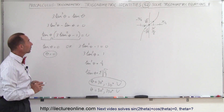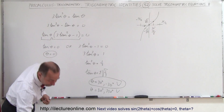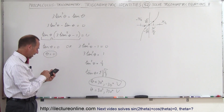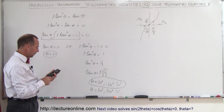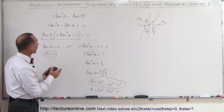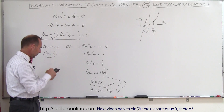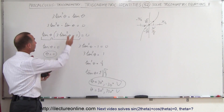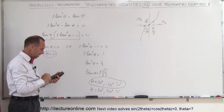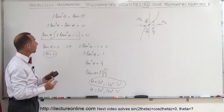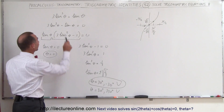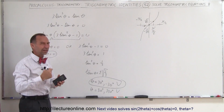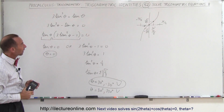It's interesting to verify. If you plug in 30 degrees and take the tangent, you get 0.577. Cube that and you get 0.192. Multiply by three and you're back to 0.577 — it works. If you plug in 30 degrees, the left side equals the right side. Grab your calculator and try it.